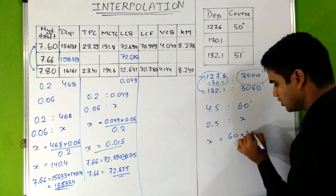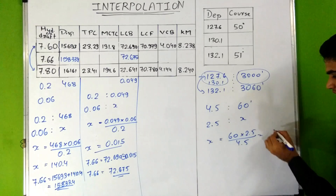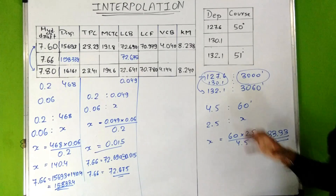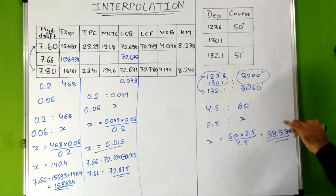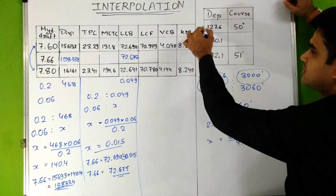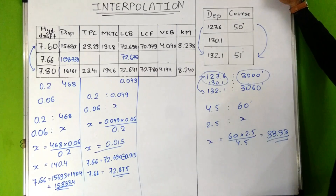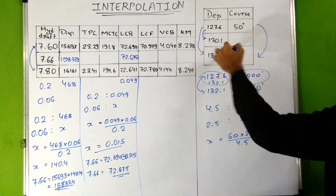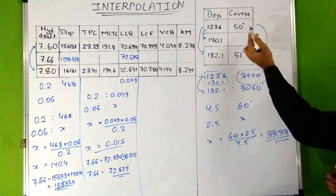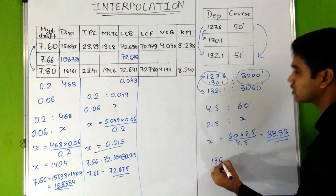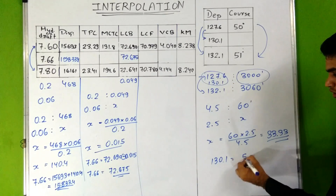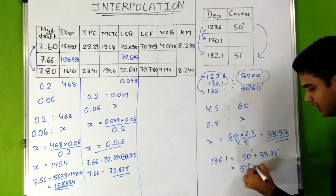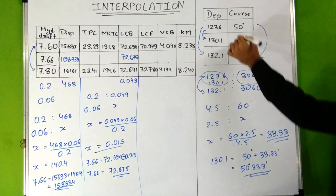We don't know the course difference for departure 130.1, so we call it x. Cross multiplication gives: x equals 60 multiplied by 2.5, divided by 4.5, which equals 33.33 minutes. Since the departure is increasing and the course is also increasing, we add x to the previous value. So for departure 130.1, the course is 50 degrees plus 33.33 minutes, giving 50 degrees 33.33 minutes.